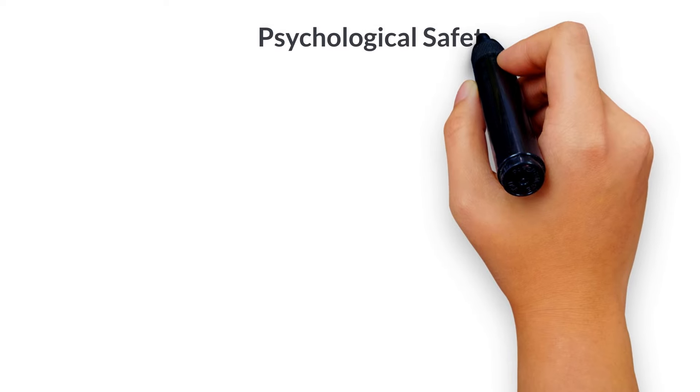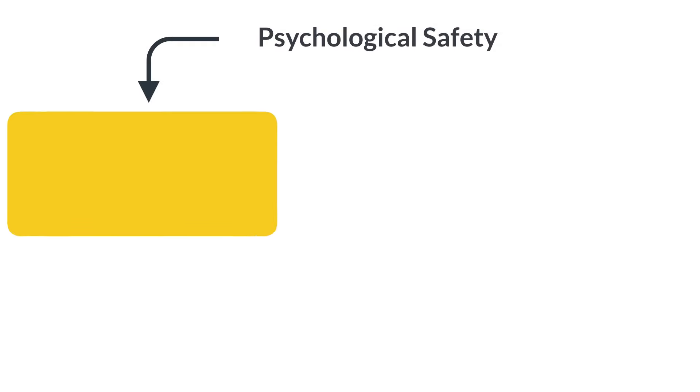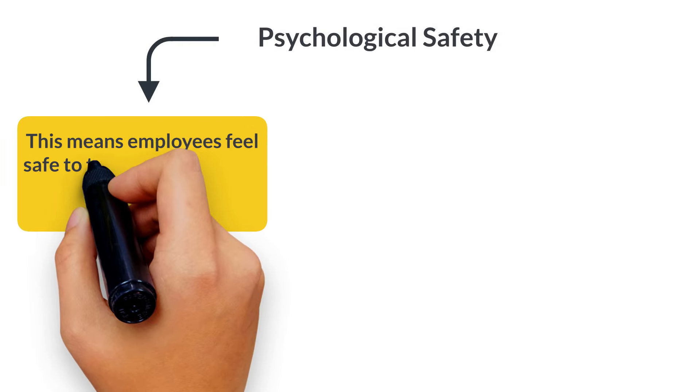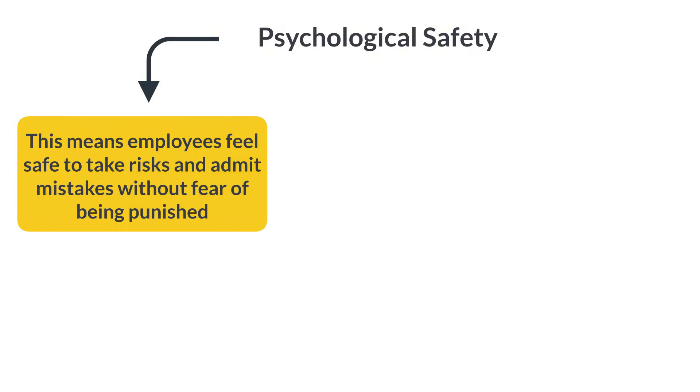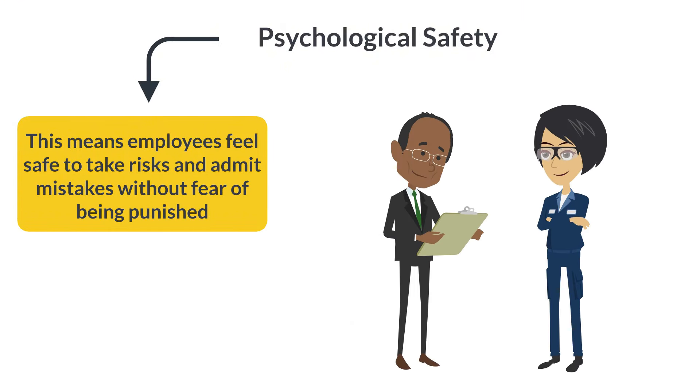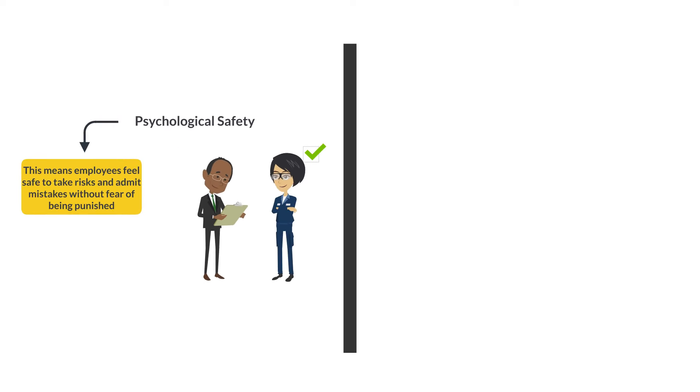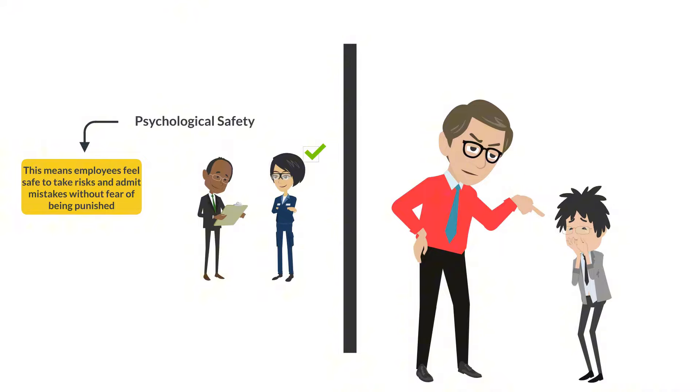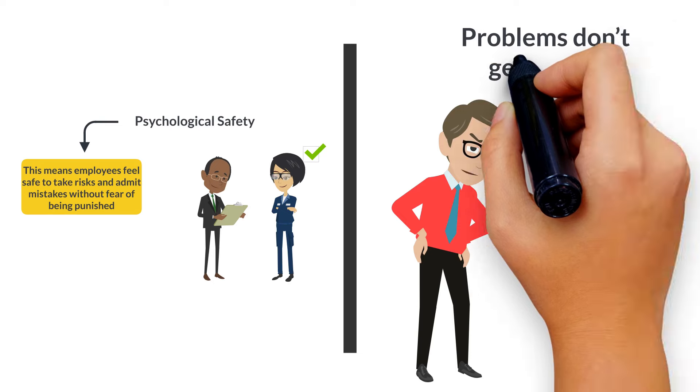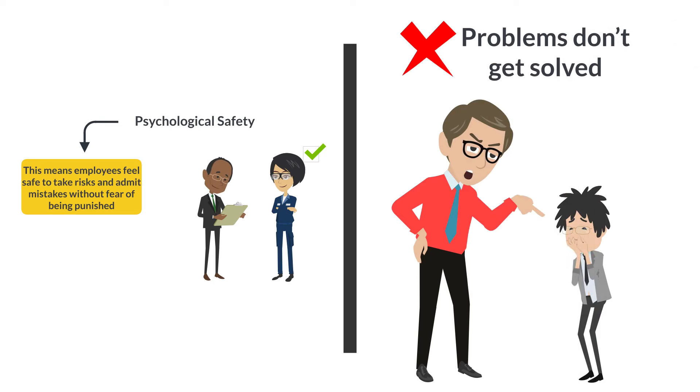A key part of creating a learning culture is providing psychological safety. This means employees feel safe to take risks and admit mistakes without fear of being punished. When people trust their colleagues and managers, they can point out problems and fix them. In contrast, in performance cultures, mistakes are often hidden because employees are afraid of punishment, which means problems don't get solved, like with the Columbia disaster.